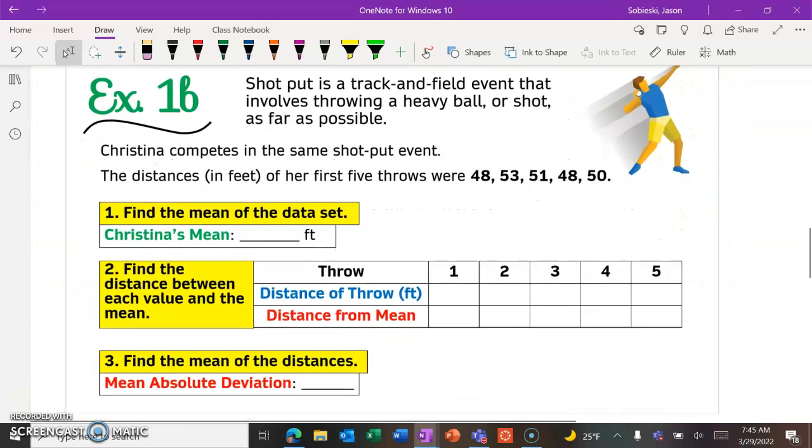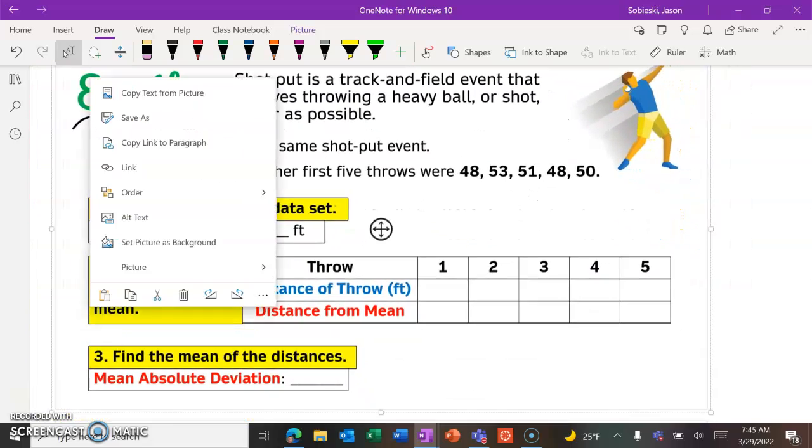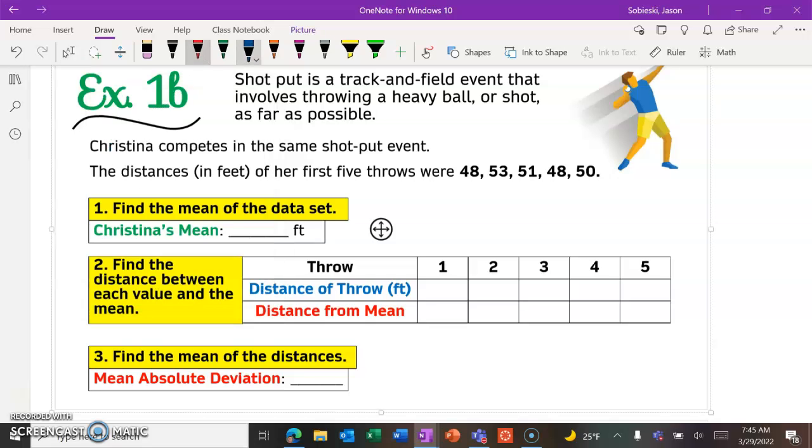Okay, let's see about trying it for Christina. So again, same thing. You have your five throws listed. We want you to pause the video and see if you can find the mean of that data set. Step one.